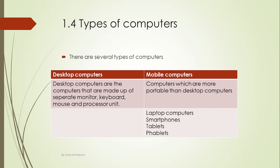There are several types of computers, divided into two separate parts: desktop computers and mobile computers. Desktop computers, as the name suggests, are made up of separate parts — monitor, keyboard, mouse, and processor unit. They have separate parts, which means they are not portable and must stay in one place.